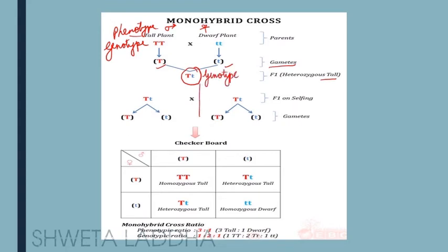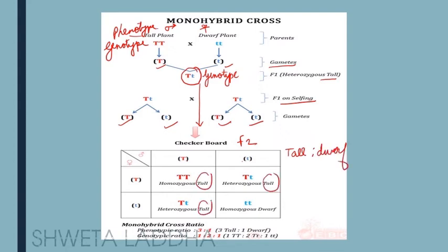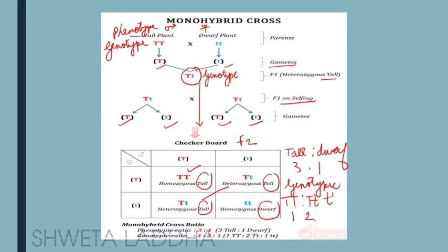When F1 plants are allowed to undergo selfing, the gametes produced are capital T and small t. In F2 generation, we see homozygous tall (capital T capital T), heterozygous tall (capital T small t), and homozygous dwarf (small t small t). The phenotypic ratio is 3 tall to 1 dwarf. The genotypic ratio is 1 capital T capital T, to 2 capital T small t, to 1 small t small t — that is 1:2:1.